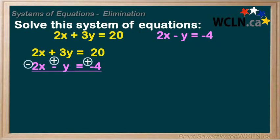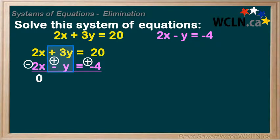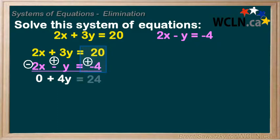It's common to just circle the changed signs so we can keep track of which ones we've changed — it sometimes gets confusing otherwise. In the first column, we have 2x minus 2x equals zero. The x's are gone — they're eliminated. In the next column, we have 3y plus y equals 4y. And in the last column, we have 20 plus 4 equals 24. We now have an equation with only one variable, and we can solve that.